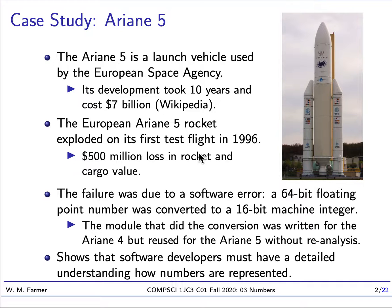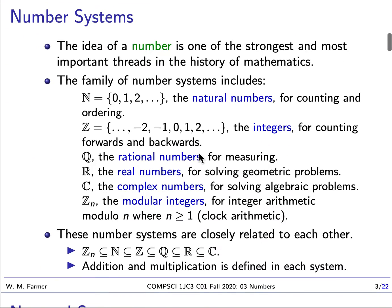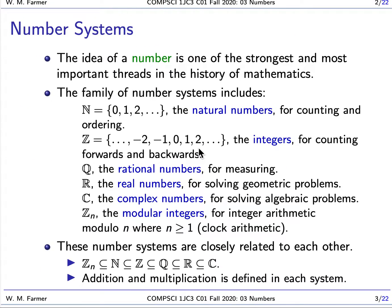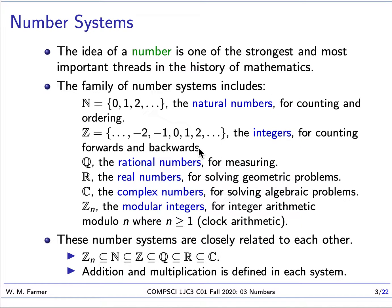Actually, the software error was really caused by a lack of good software engineering. The module that did this conversion was written for the Ariane 4 and reused for the Ariane 5, but it was never retested for the Ariane 5, which had different requirements. This is a fundamental development flaw. The reason I'm talking about the Ariane 5 disaster is it shows that software developers, computer scientists, and software engineers must have a detailed understanding of how numbers are represented — it is a crucial subject.